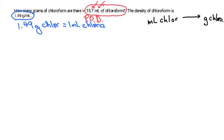This is a one-step conversion. We can just use the density to get us there. So the math looks like this. We have 15.7 milliliters of chloroform.